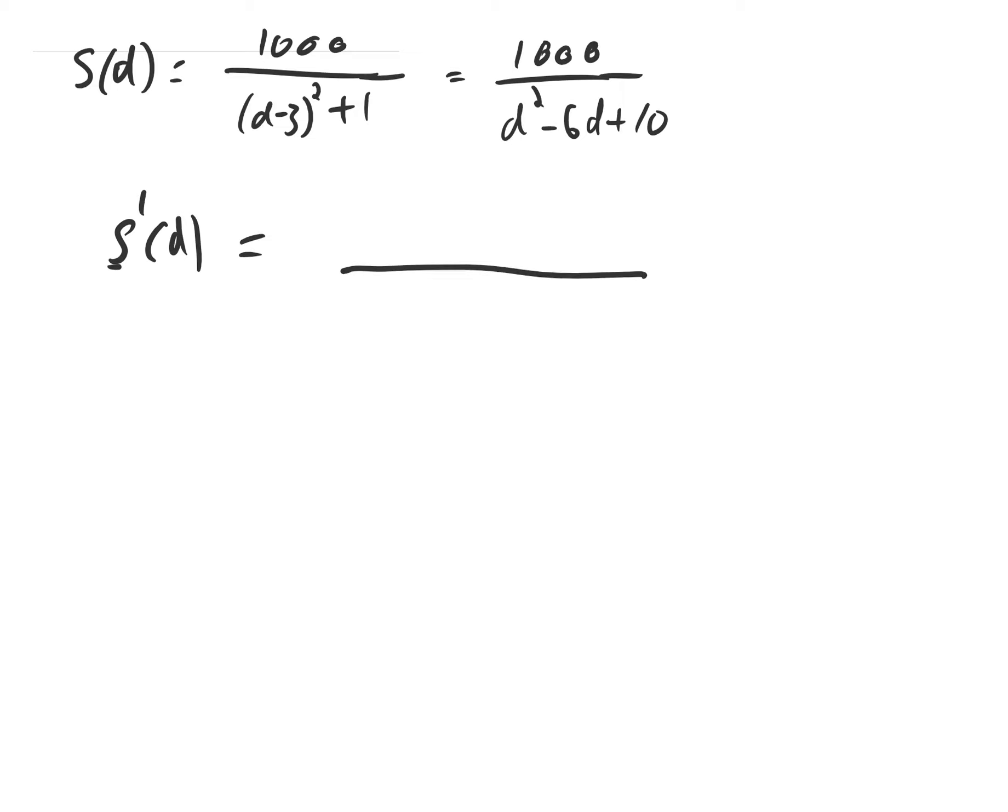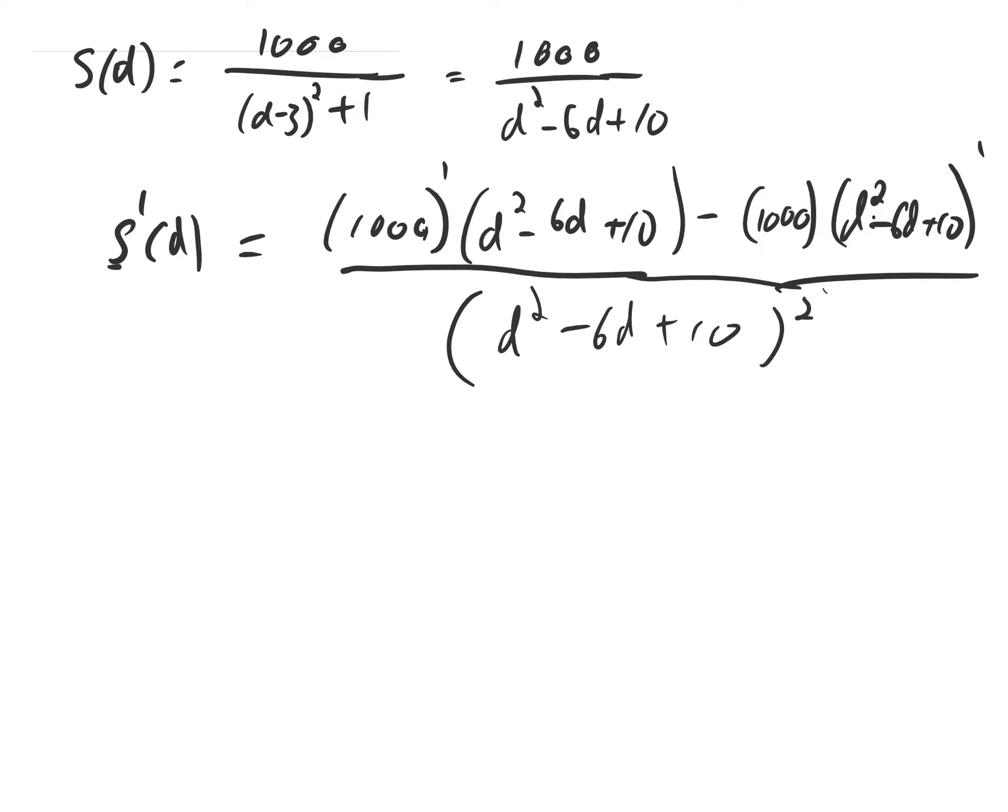So the quotient rule tells me it's going to be the derivative of the top times the bottom, 6d plus 10. Then minus the top without a derivative times the derivative of the bottom, D squared minus 6d plus 10, over the square of the bottom, D squared minus 6d plus 10 in parentheses. The derivative of 1,000 is 0 because it's a constant. So we get 0 minus 1,000 times 2d minus 6.